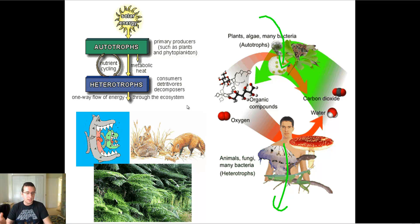But I wanted to clarify that there are two main types of organisms in the ecosystem. You have the producers, also called autotrophs, and you have the consumers, also called heterotrophs.